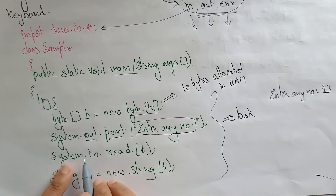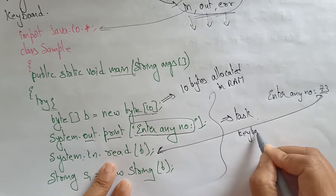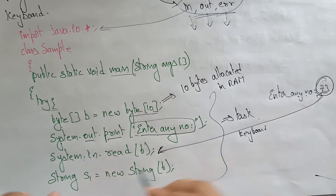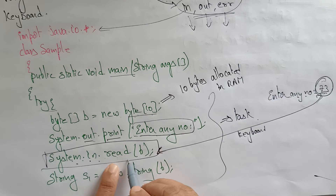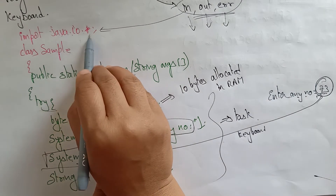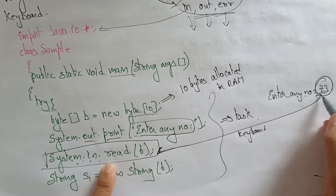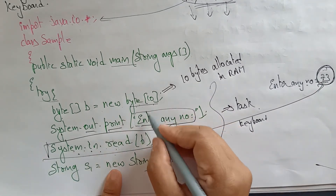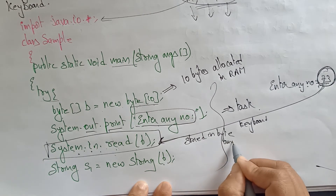Let's enter 73. Now system.in.read — so this 73 is read from the keyboard. If you want to enter data here, this method needs to be called: system.in.read. in.read is a method present in java.io.* which is used to enter data from the keyboard. So with the help of the keyboard I am entering the data 73. This data is of type integer — it is a byte, and it is stored in the byte array.